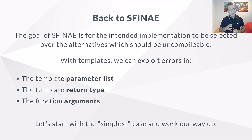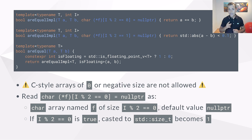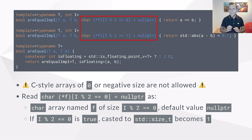Now that you know some of the potential alternatives, let's take a look at SFINAE. The idea is that we will exploit substitution failure in the template parameter list, the template return type, and the template function arguments. Let's start showing how to use SFINAE without introducing any new feature of the language. Let's take a look at the implementation of r_equal. The goal is the same as before — when we compare two floating point numbers, the equality operator is not good enough. We will take advantage of a rule that says C-style arrays need to have a size larger than zero; compiling an array of size zero will fail. Let's take a look at the second argument of the r_equal_impl functions — it is a char C-style array named f, whose size is i modulo 2 compared to 0 or 1, with a default value of null.